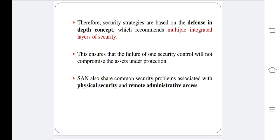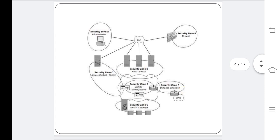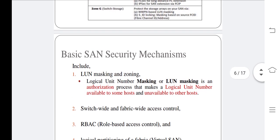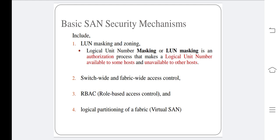SANs not only suffer from certain risks and vulnerabilities that are unique, but also share common security problems associated with physical security and remote administrative access. In addition to implementing SAN-specific security measures, organizations must simultaneously leverage other security implementations in the enterprise. The diagram shows the various levels of a storage networking environment that must be secured. Basic SAN security mechanisms include logical unit number masking and zoning, switch-wide and fabric-wide access control, role-based access control, and virtual zones.